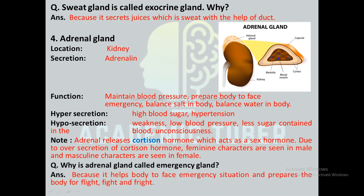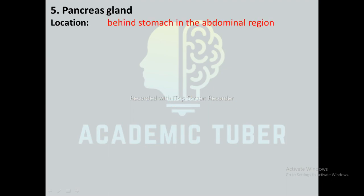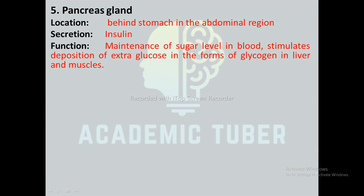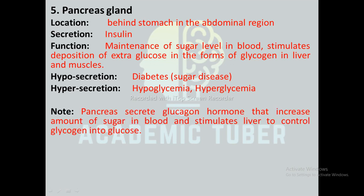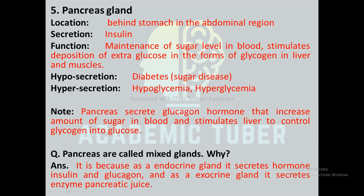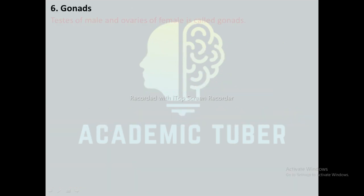Pancreas: it is located behind the stomach in the abdominal region. It secretes a hormone called insulin. The function of insulin is to maintain sugar levels in the blood and stimulate deposition of extra glucose in the form of glycogen in the liver and muscles. Hypersecretion of insulin causes hypoglycemia, whereas hyposecretion causes diabetes, popularly known as sugar disease. The pancreas also secretes glucagon hormone, which increases the amount of sugar in the blood and stimulates the liver to convert glycogen into glucose. The pancreas is called a mixed gland because as an endocrine gland it secretes insulin and glucagon, and as an exocrine gland it secretes pancreatic juice.